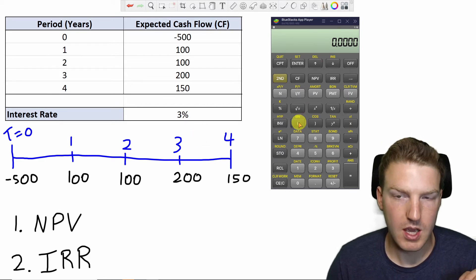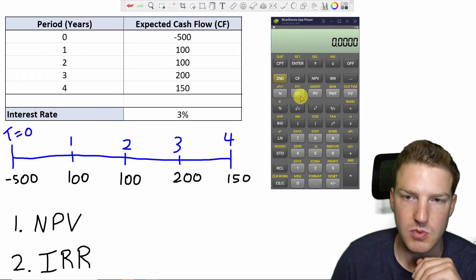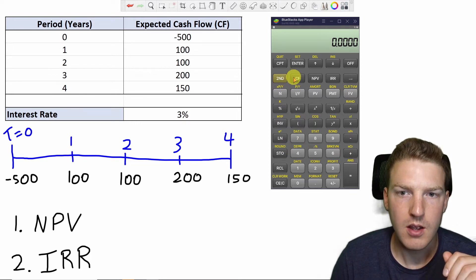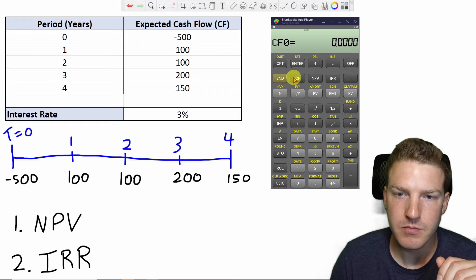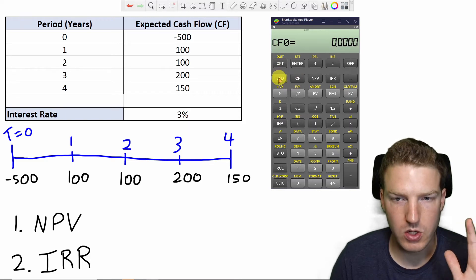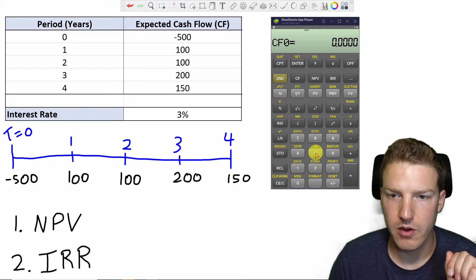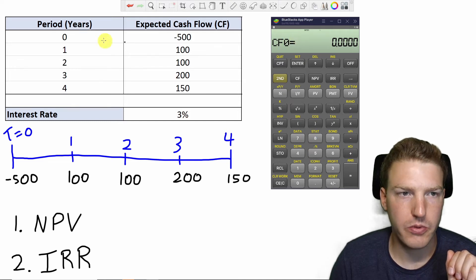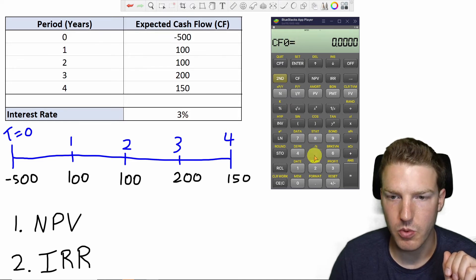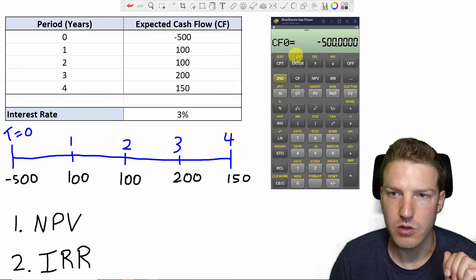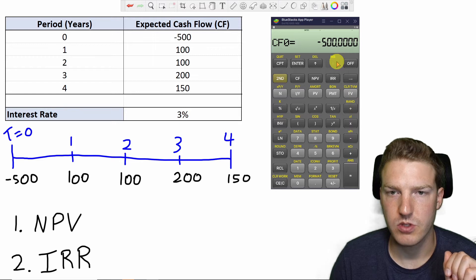We can use this calculator which replicates the BA2+, the Texas Instruments calculator. We'll hit the CF button. And then first things first, we're going to hit second clear work just to make sure everything's out of there. And then for the CF0, that is the cash flow at time zero. We'll put in 500, negative, and then enter. So that is submitted for cash flow zero.